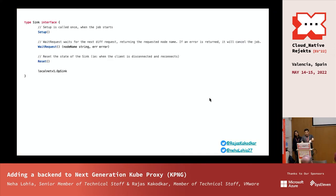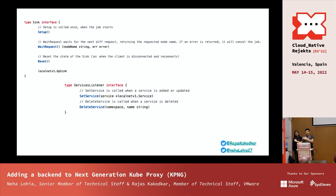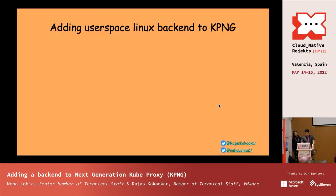This is what a backend sync interface looks like — these are all the methods you have to implement to set up a backend in KPNG. Setup is one of the most important methods where you initialize your proxy. Then there's a service listener with set_service and delete_service, called when a new service is added, updated, or deleted. Similarly, there's set_endpoint and delete_endpoint — set_endpoint will be called after set_service, and likewise for delete_endpoint.